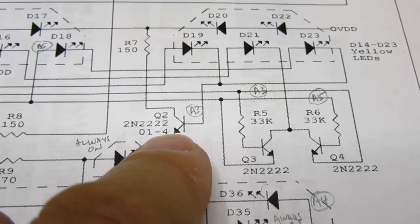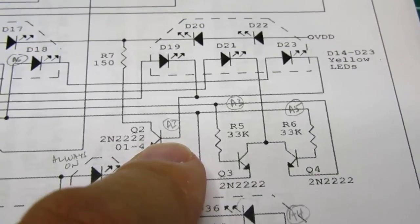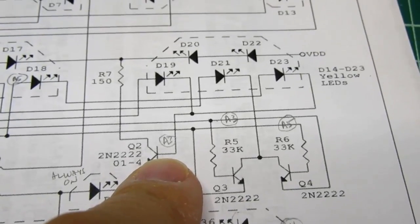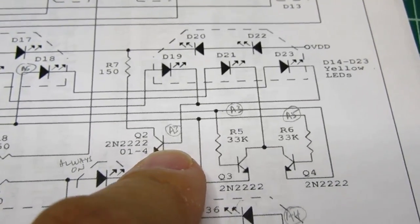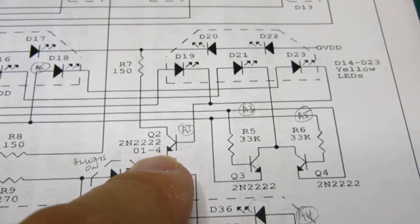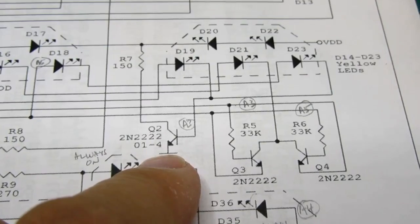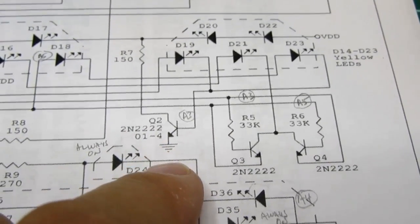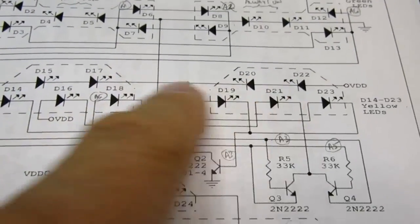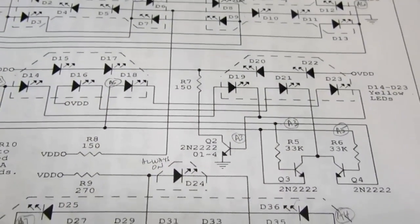So what you end up with is a sort of a decoder. A3 and A5 between them have four possible states, binary patterns that they can be in. What these transistors are essentially doing is forming a decoder that takes those two bits and derives the four possible states from them and uses those to drive the eye LEDs in four different patterns. Again, very clever.